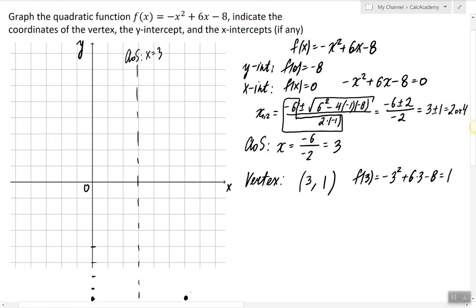We have the vertex at (3, 1), and we also have x-intercepts at two and four.